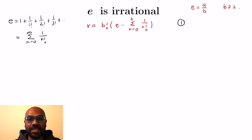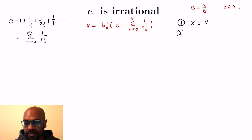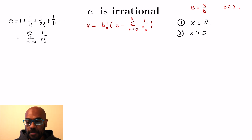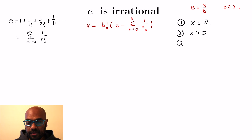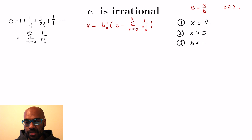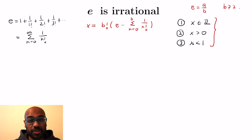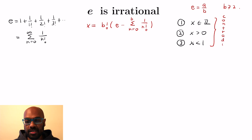We're going to prove three interesting facts about x, and I suggest pausing the video and trying to prove these yourself. First, we're going to prove x is an integer. Then we're going to prove x is positive. And finally, we're going to prove x is actually less than 1. So we'd have an integer strictly between 0 and 1, which is impossible. This gives us a contradiction.